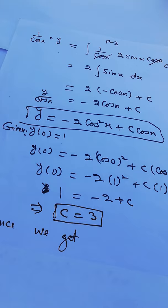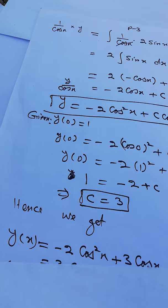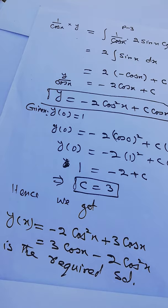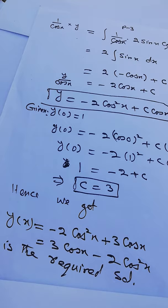Solving gives C equals 3. Substituting this back into the solution, the final answer is y(x) equals minus 2 cos squared x plus 3 cos x, or equivalently 3 cos x minus 2 cos squared x. This is the required solution of the given linear differential equation.